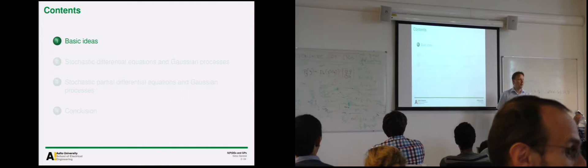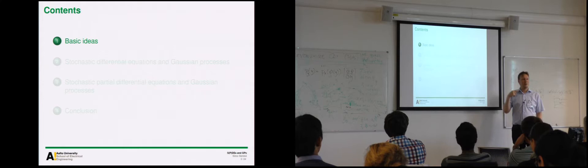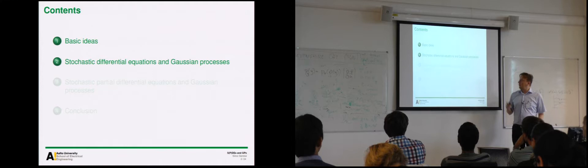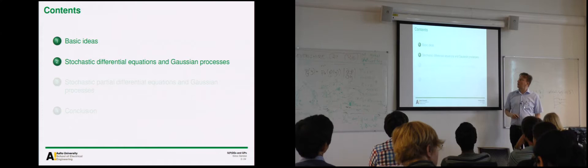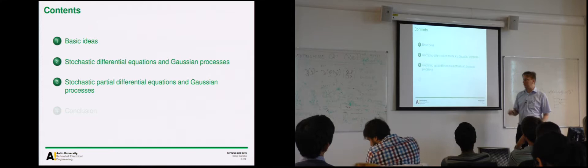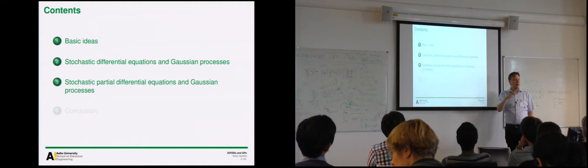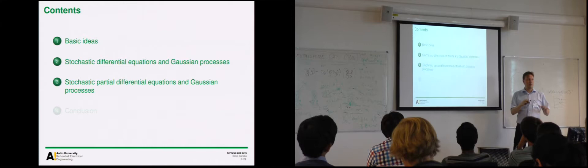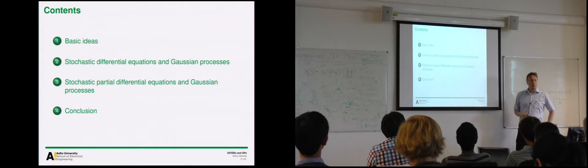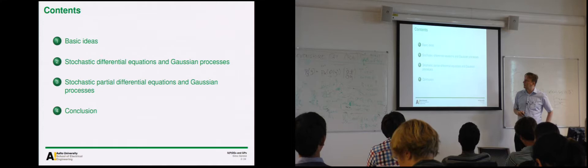Let's start with the basic ideas and derive a connection between the Ornstein-Uhlenbeck covariance function and the state-space representation. Then we will look at more general stochastic differential equations and Gaussian processes. The difference is that with a differential equation, you can always think of time as the variable the equation evolves in, but in the case of partial differential equations you don't have that kind of interpretation. Then we'll cover conclusions and some applications of this point of view.